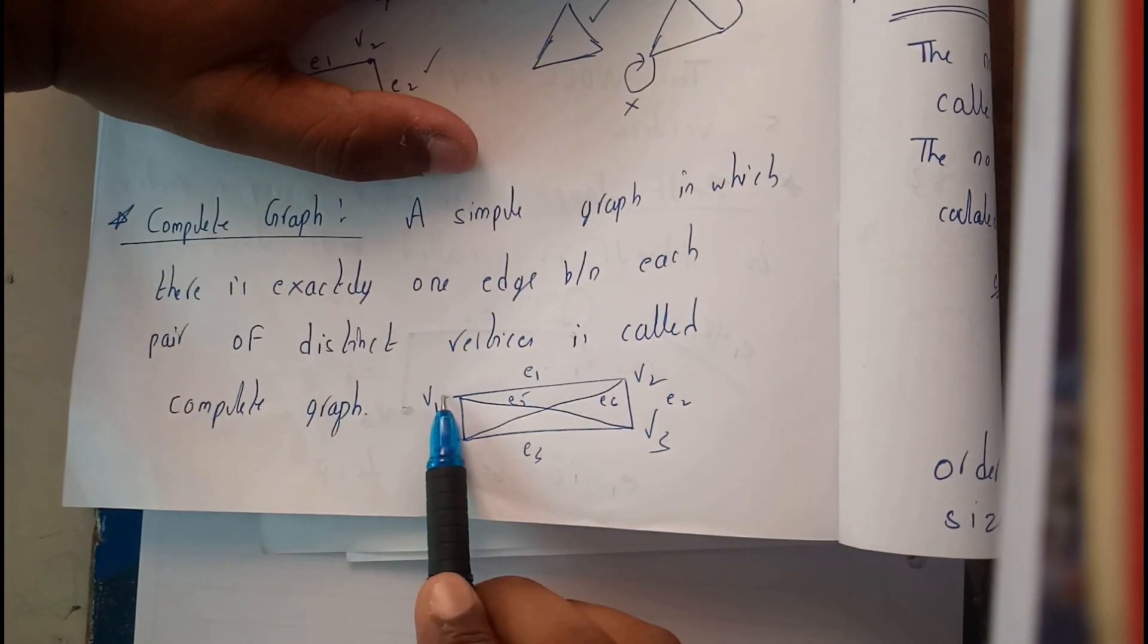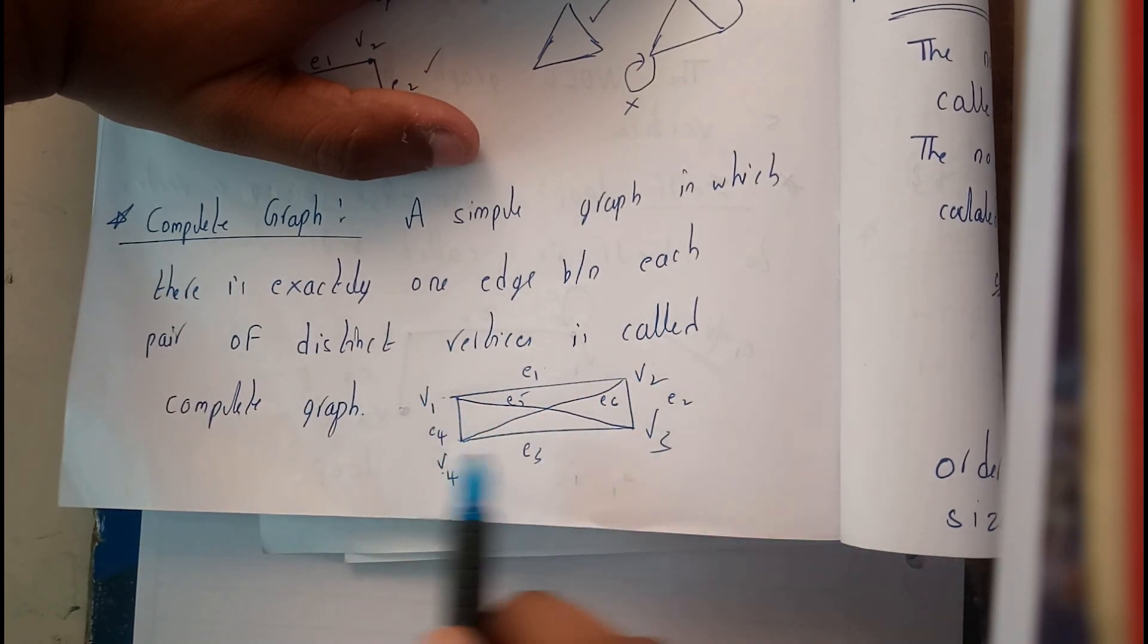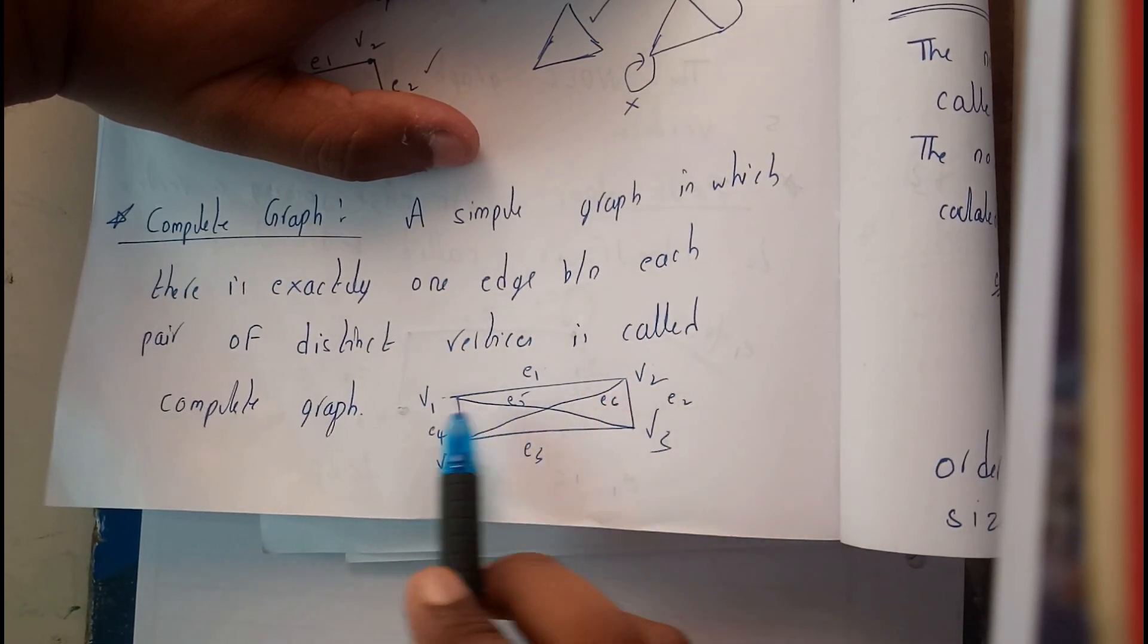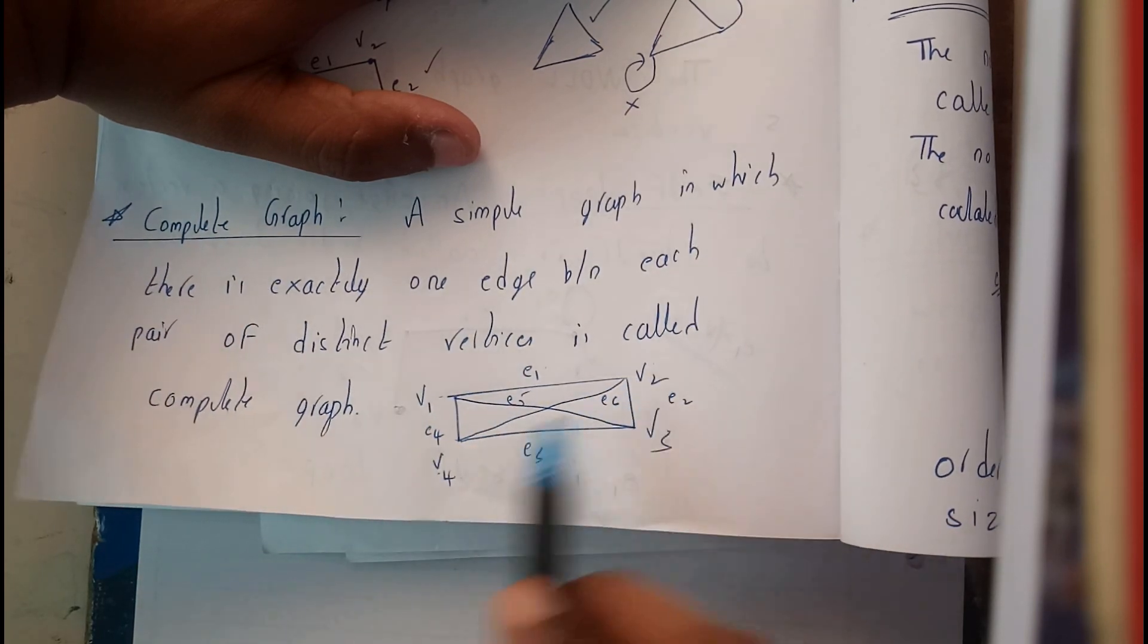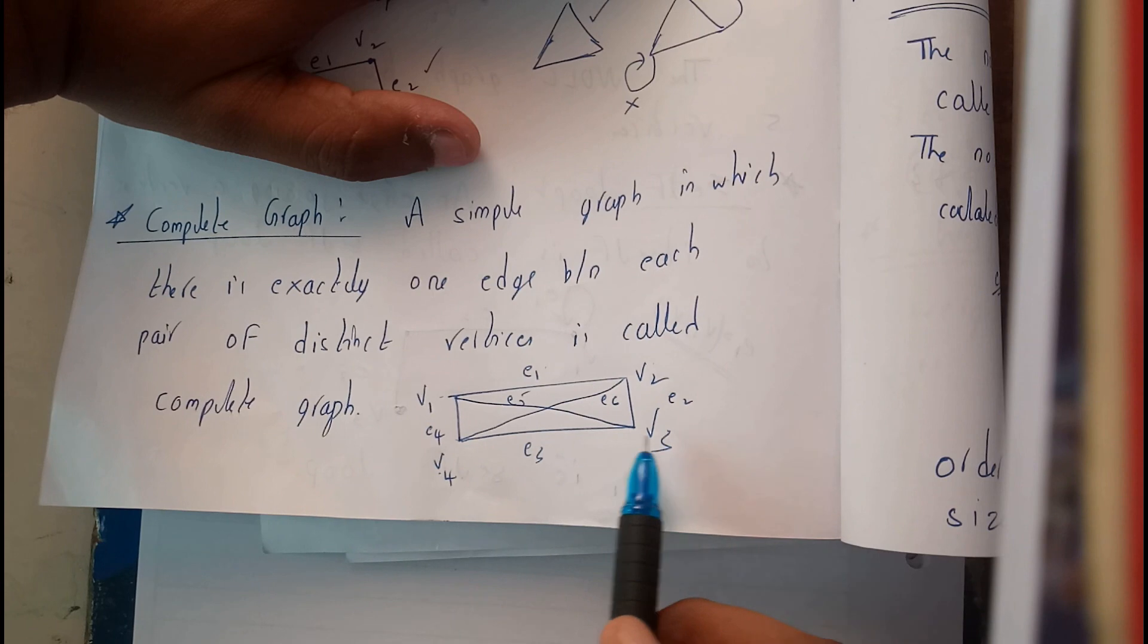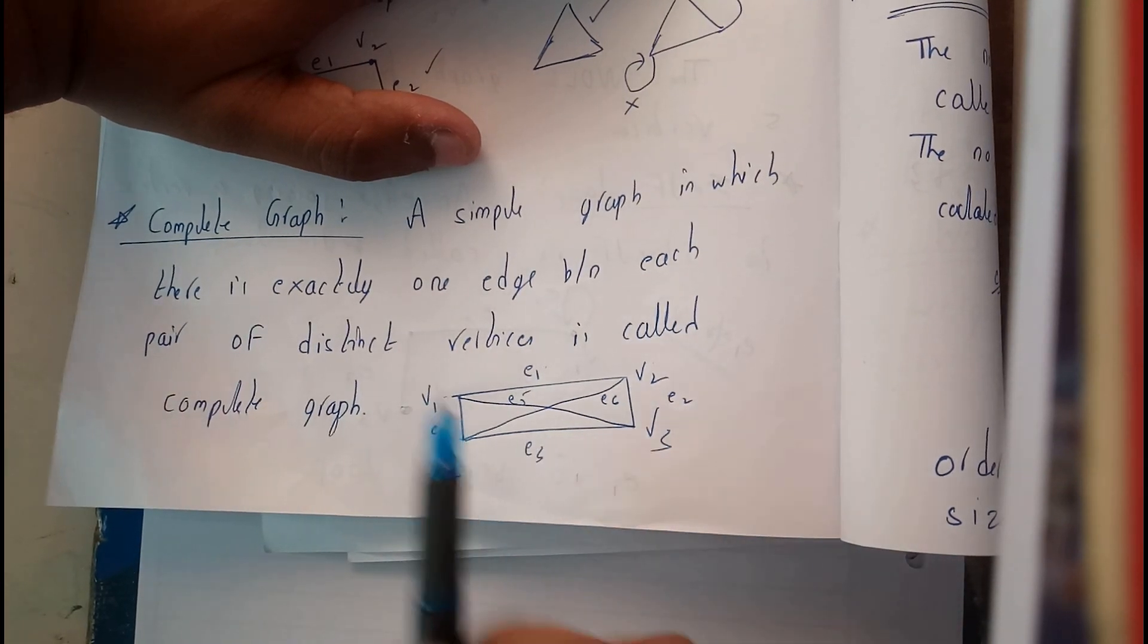So whenever we consider v1, we can write v1 to v2, v1 to v3, v1 to v4. See, all the possibilities are there. Again v2 to v1, v2 to v4, v2 to v3, all the possibilities are there. Similarly for v3 and v4, hence this is called as a complete graph.